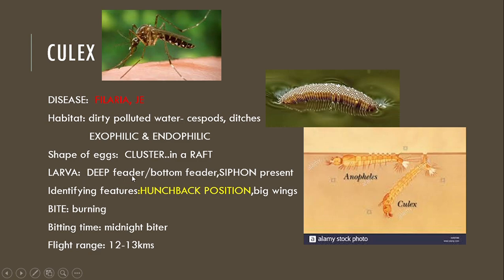Characteristics of the larvae: Culex larvae is a deep feeder or bottom feeder, and the siphon is present while the respiratory tube is absent. As we can see in this picture, this is a Culex larva which is present deeper when compared to Anopheles larvae, and consists of a siphon. Identifying features of the adult mosquito: it lies in a hunchback position and consists of big wings. The bite is burning and painful. Biting time is midnight and the flight range is 12 to 13 km.